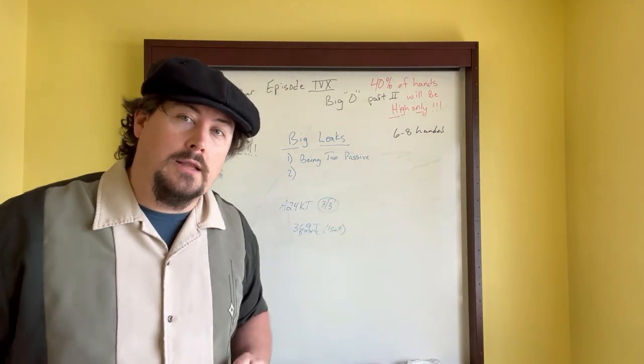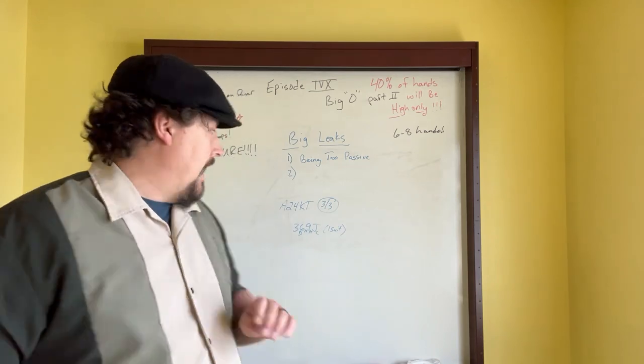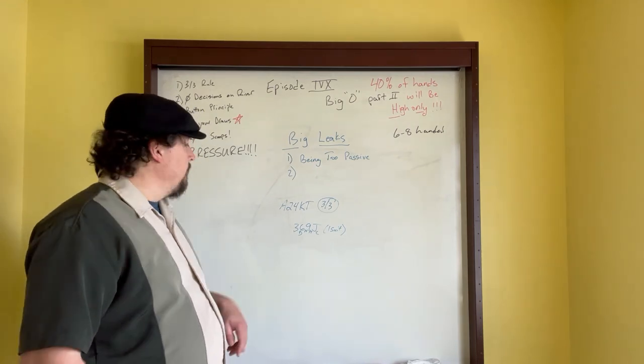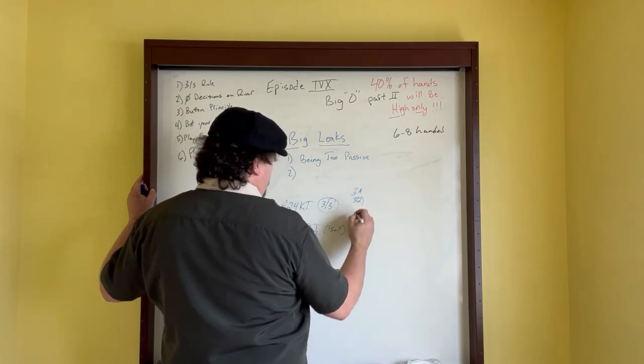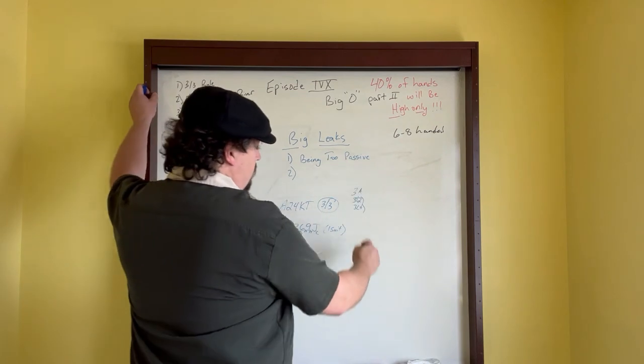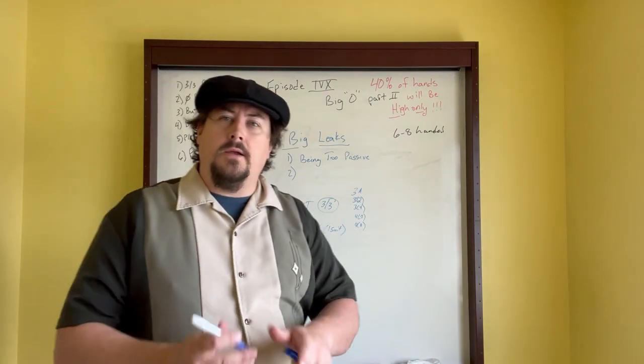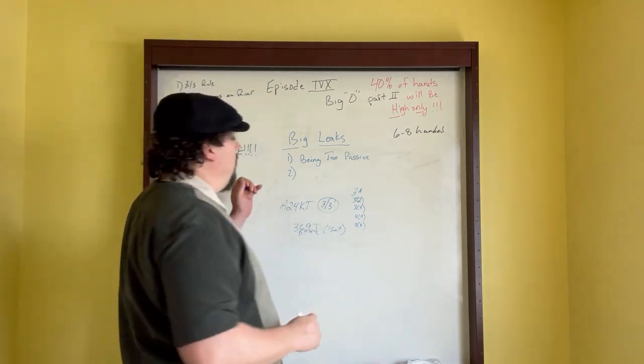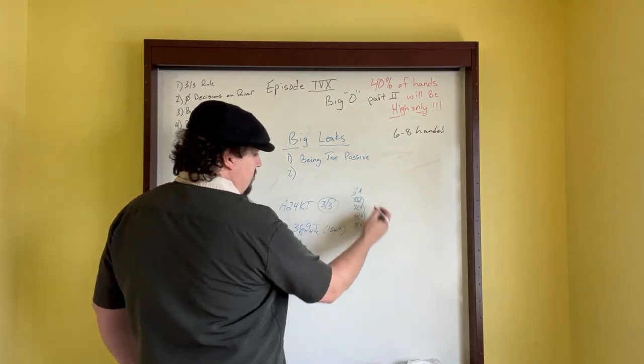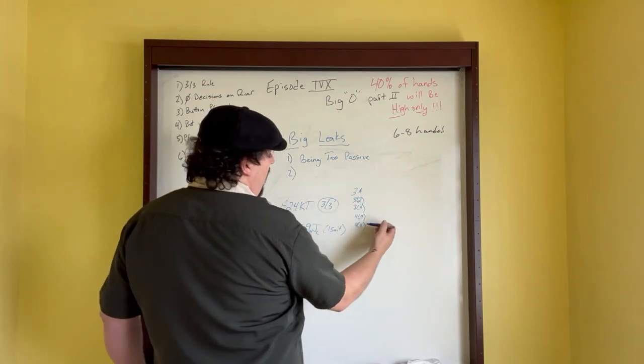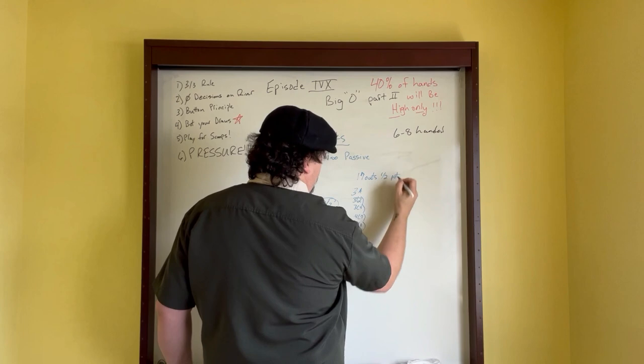If you look at this hand right here, this is what we call a no bust nut low draw. What a no bust nut low draw means is any low comes out that doesn't pair the board, you're guaranteed to get half the pot. Any ace, any deuce, any four, it's not going to counterfeit you, you're still going to have the nut low. So what we need to do is figure out what our outs are. There's three aces left in the deck, three deuces left, three fours left. Those are all going to give you nut lows. Then there's four sevens left and four eights left. All of those are going to give you nut lows. Just on half of the pot, you're looking at 17 outs for half the pot.